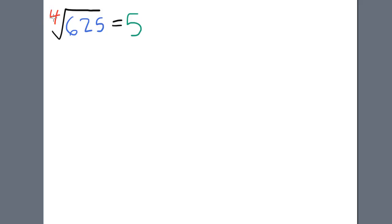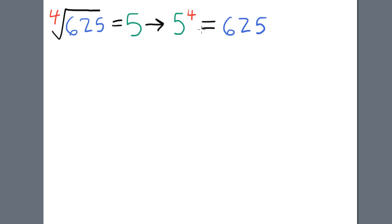In this case, the fourth root of 625 equals 5. Thought of another way, 5 to the 4th equals 625.